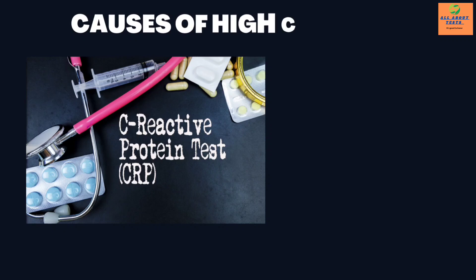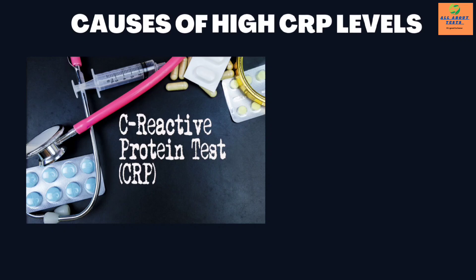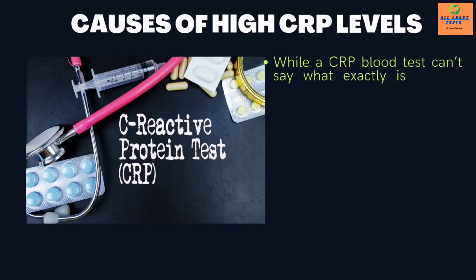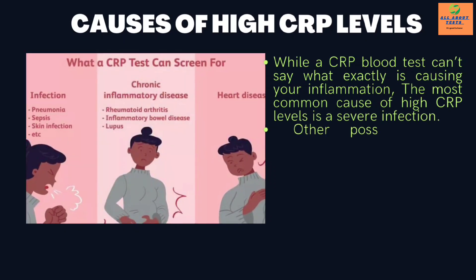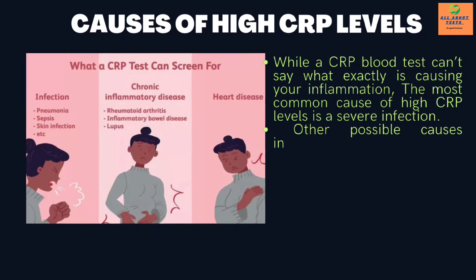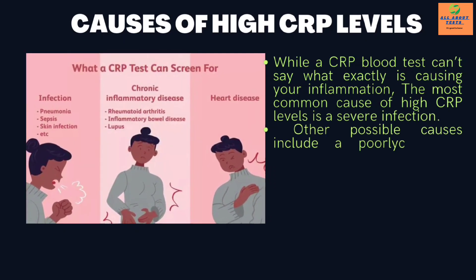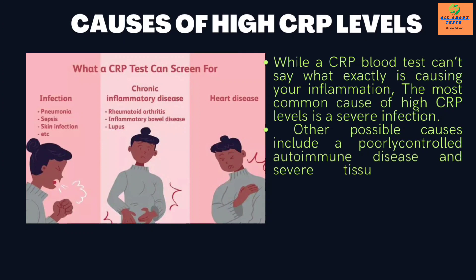Causes of high CRP levels. While a CRP blood test can't say what exactly is causing your inflammation, the most common cause of high CRP levels is a severe infection. Other possible causes include a poorly controlled autoimmune disease and severe tissue damage.